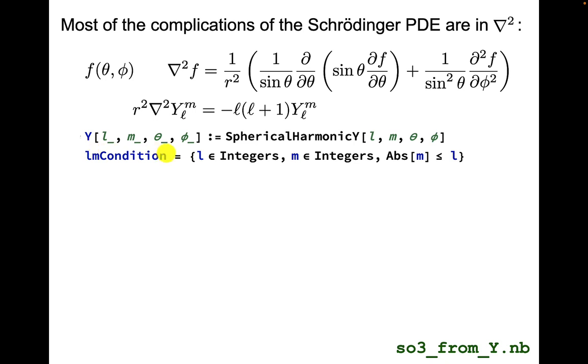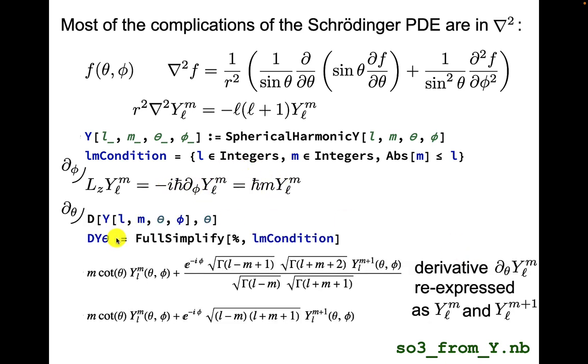Because we're solving PDEs, we want to see what happens to this eigenfunction if I just act on it with a single derivative. Let's first take the angle phi. So I can define an operator which is essentially a derivative with respect to phi, but I'm throwing in a minus i and ℏ. Then I get the eigenvalue ℏm. Mathematica with a simplification re-expresses the derivative as a linear combination of Y_lm and Y_l,m+1.